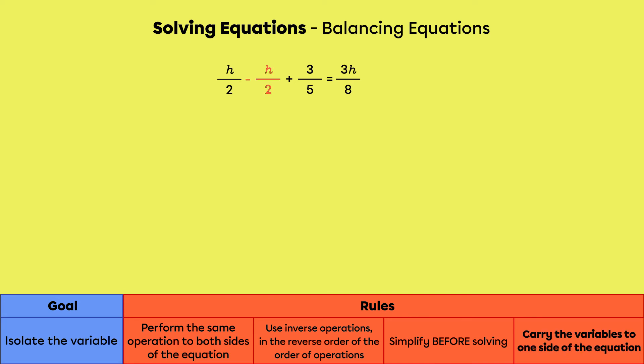We can immediately remove the h over 2 on the left side. Remember, we also have to subtract h over 2 from the right side as well. On the left side, the h's over 2 cancel each other out. There are three-fifths left.